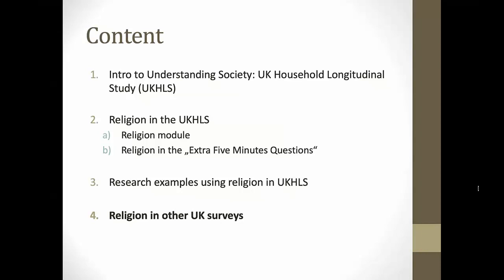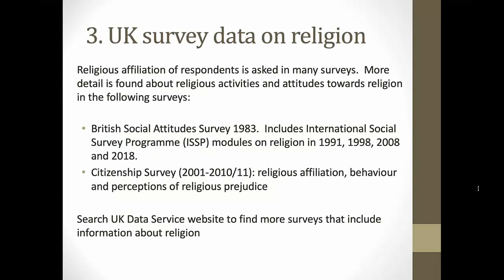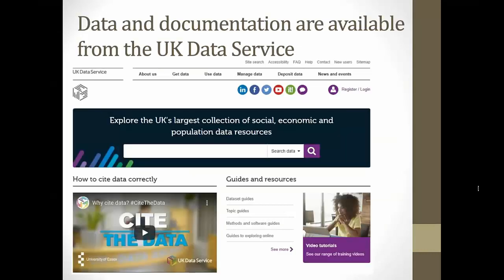To end the presentation, there are some references to other surveys that include religion information. The British Social Attitudes Survey has been asked in most years since 1983, usually covering basic religion information, but in 1991, 1998, 2008 and 2018 uses the ISSP module going into much more depth. The Citizenship Survey ran from 2001 to 2011 and includes religious affiliation, behaviour and perception of religious prejudice. All datasets mentioned can be found on the UK Data Service website.